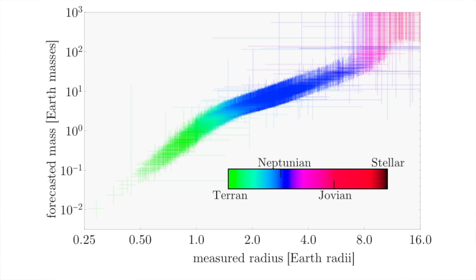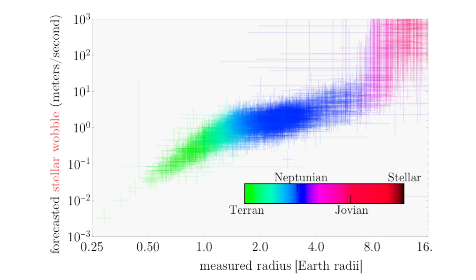By forecasting the masses of 7,000 KOIs, we found that the precision of our mass forecasts are controlled by this intrinsic dispersion. In other words, obtaining more precise radii won't actually lead to a tighter mass forecast.